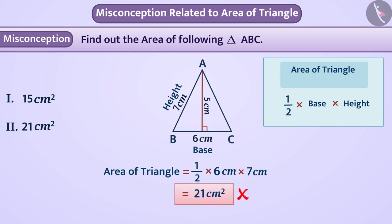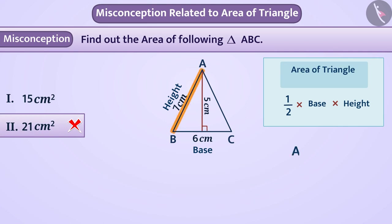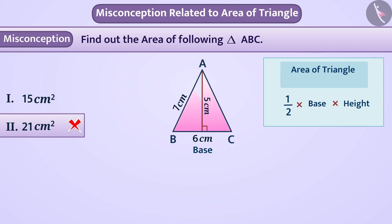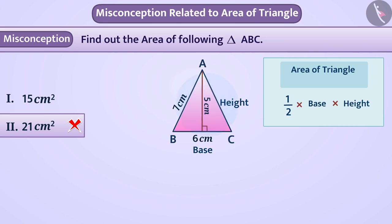But it is a misconception — option 2 is the wrong answer. Side AB is not perpendicular to base BC, therefore we cannot consider it as height. The height of the triangle is the perpendicular distance from the opposite vertex to the base. Here, the perpendicular distance from vertex A to base BC is given as 5 centimeter, so we take the height as 5 centimeter.